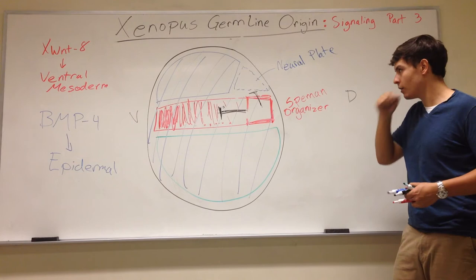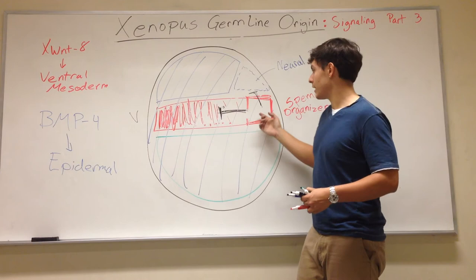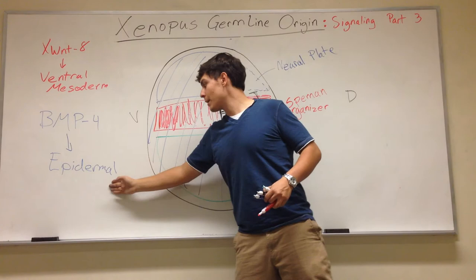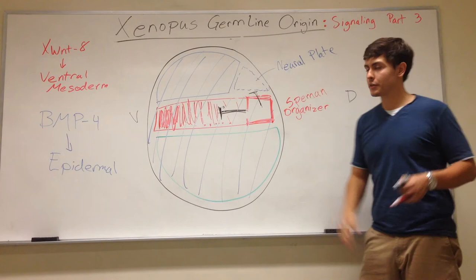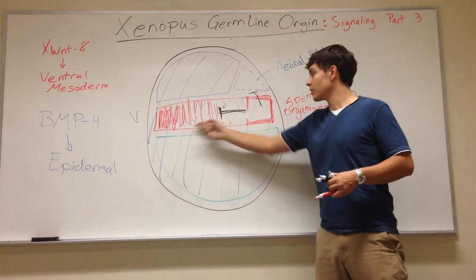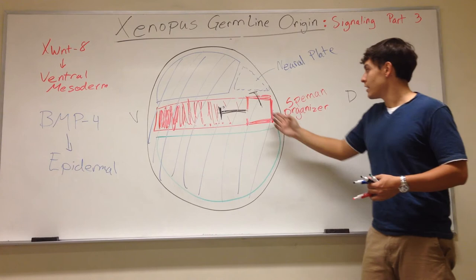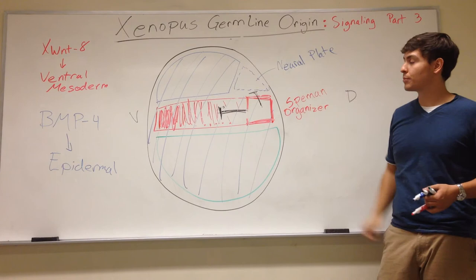So normally X-Wnt8 will make ventral mesoderm, but it can be suppressed to make a gradient. Normally BMP4 will make epidermal cells, but it can be suppressed by the Spemann organizer to create a neural plate. The basic principle is: when BMP4 is inhibited, the cells in this region are signaled to become neural plate. If BMP4 is not inhibited, these cells will just become epidermal.